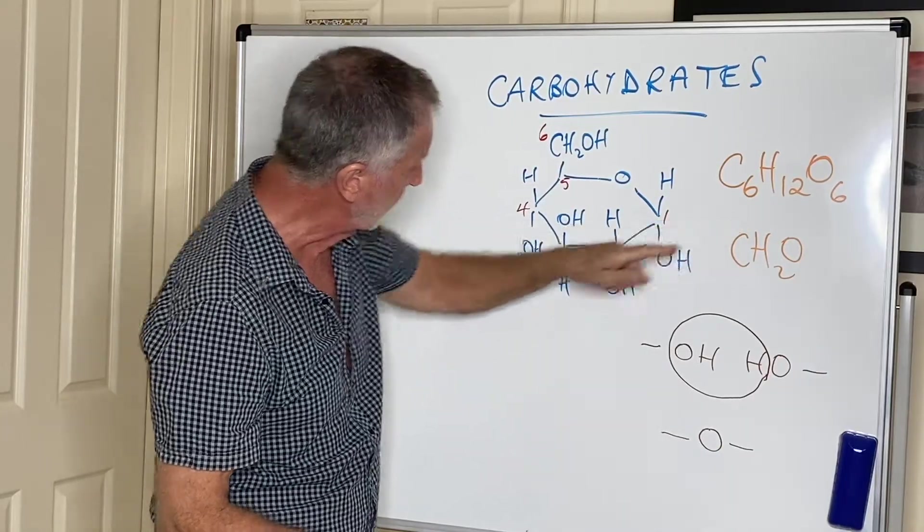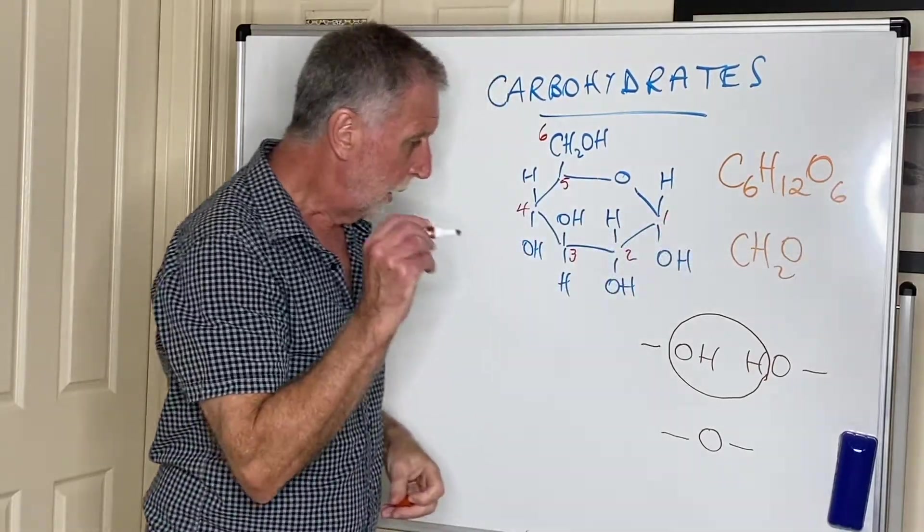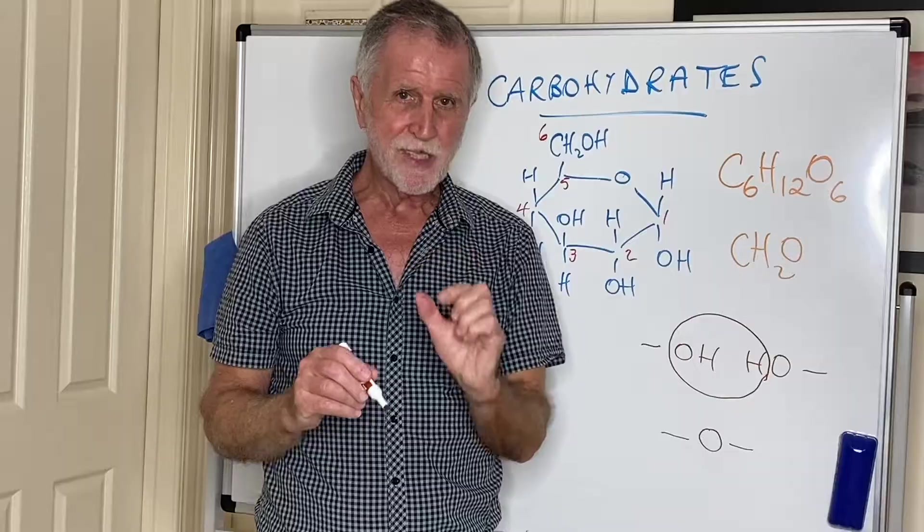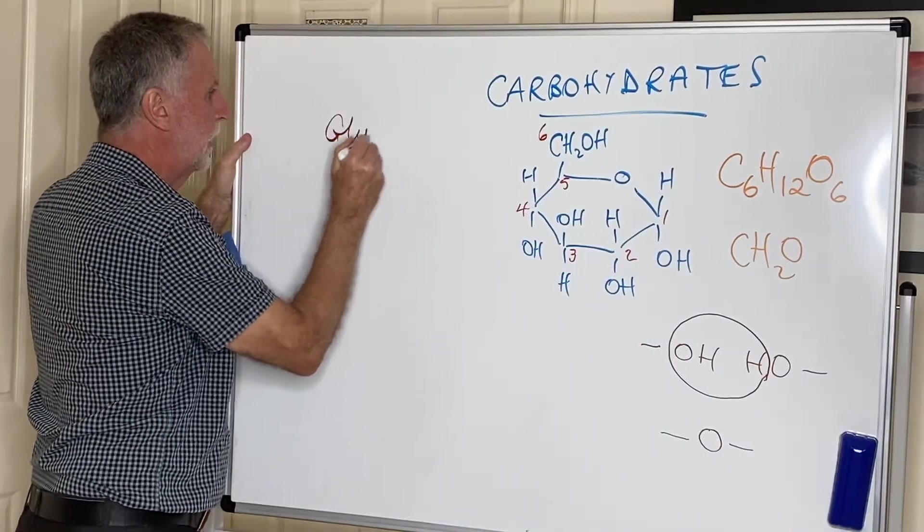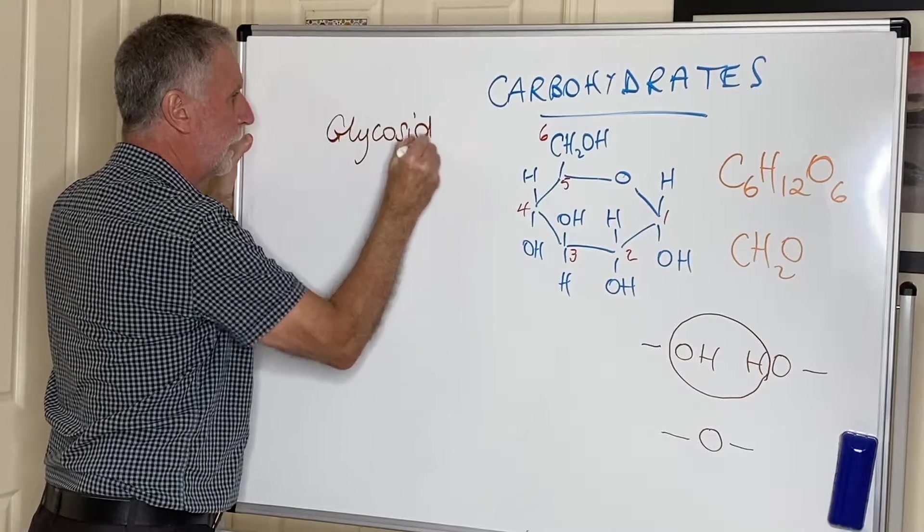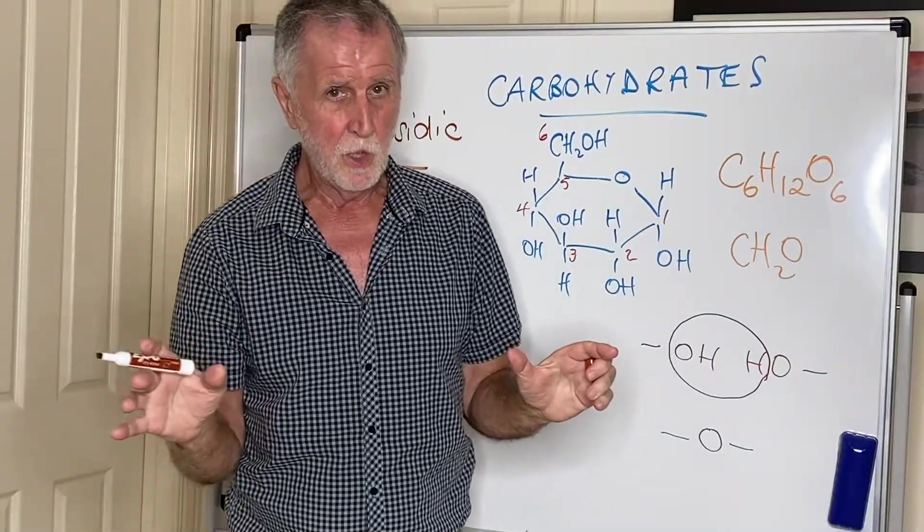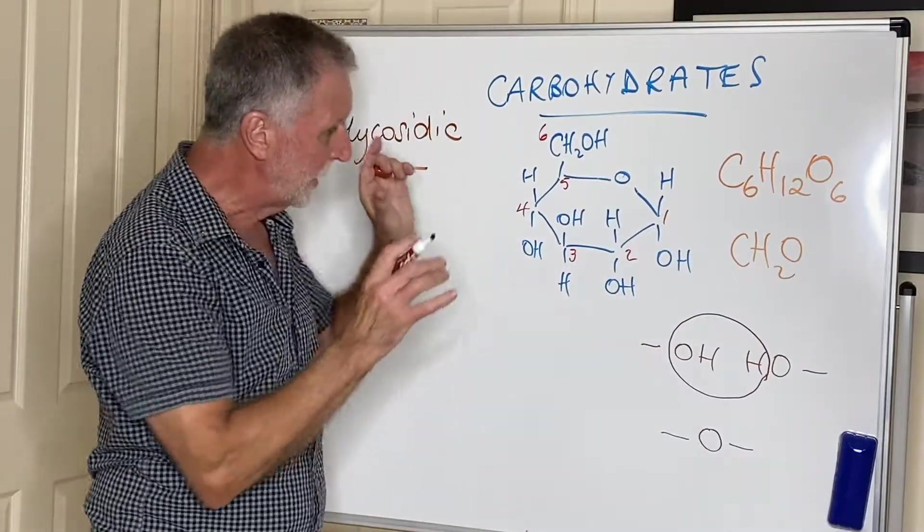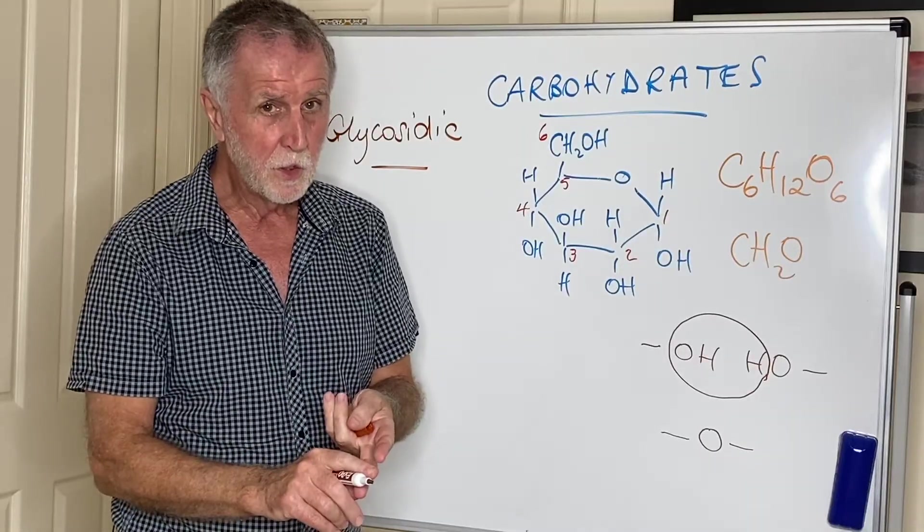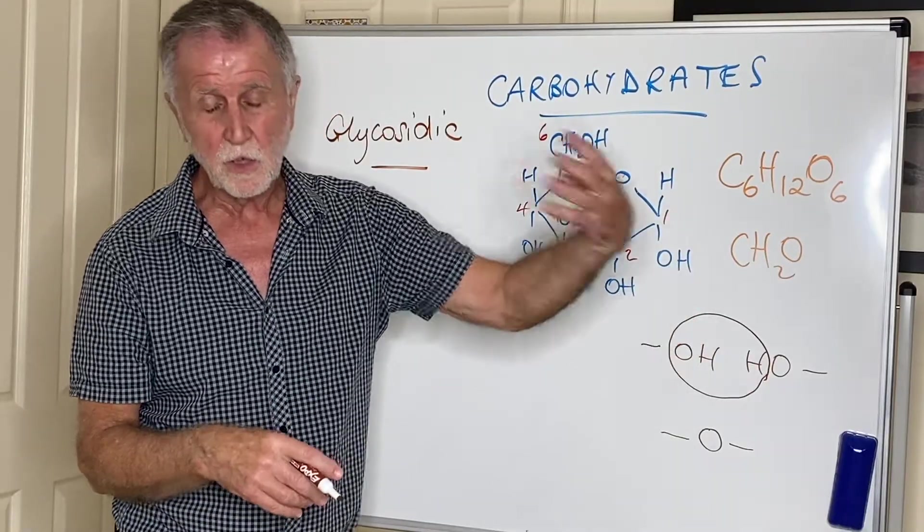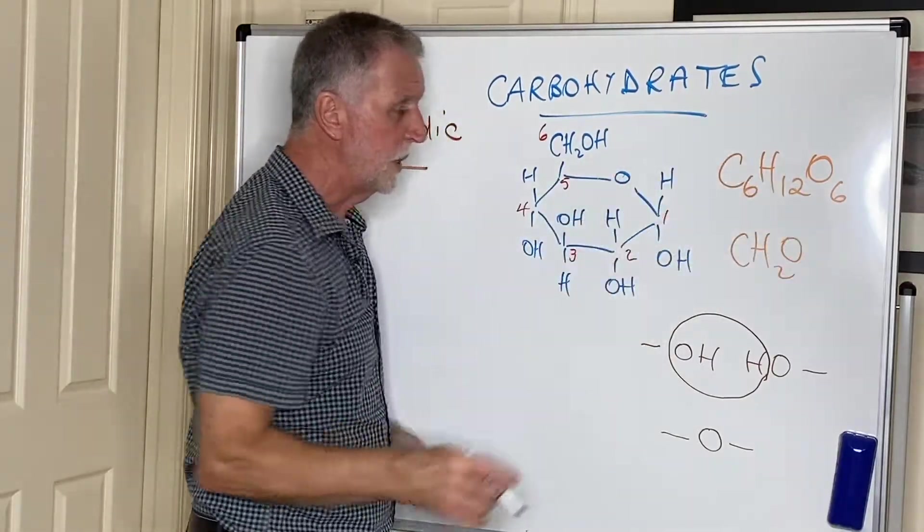That is called a glycosidic link. Let's write it down here. If you see glycosidic, it's the only time you see that word in the entire syllabus. So this is now the kind of link you get. It's not an ester, it's not an amide. In carbohydrates, the link between two monosaccharides is called a glycosidic link.